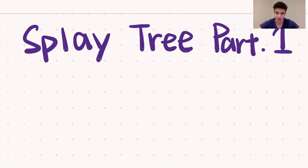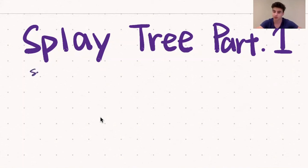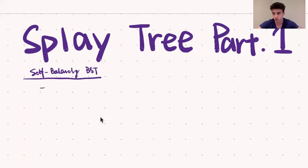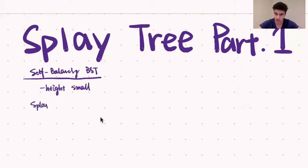Today's algorithm we're going to be discussing splay trees. Before we talk about the splay tree, we first need to understand the concept of a self-balancing binary search tree. A self-balancing binary search tree is a binary search tree that automatically keeps its height small in the face of arbitrary item insertions or deletions. A splay tree is a member of this subset of the self-balancing binary search trees.